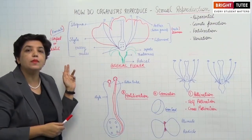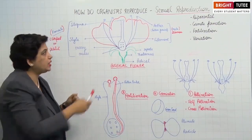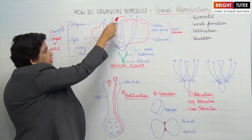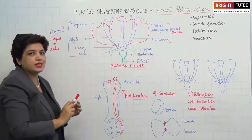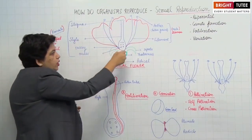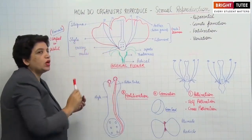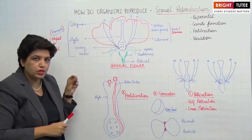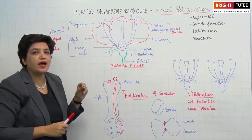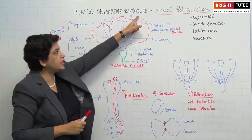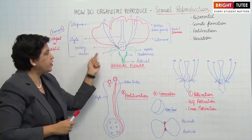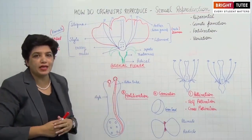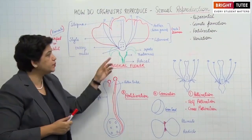In the center is the female reproductive part called the carpel or pistil. It has three parts: the topmost sticky part is called the stigma, then the stalk-like structure called the style, and a swollen part at the bottom called the ovary. The ovary bears small ovules, and these ovules have the female gamete. So male gametes are in the pollen grains and female gametes are in the ovules.